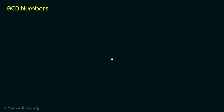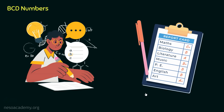Let's understand why we need BCD numbers. Suppose we want to total a student's marks from an exam — the marks will evidently be in decimal. If we want the microprocessor to total the marks, computers only understand binary, ones and zeros. For situations like this, BCD numbers are extensively used. The name 'binary coded decimal' explains the acronym BCD — we are coding decimals in binary.